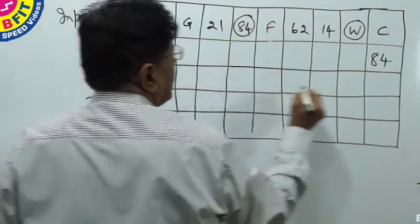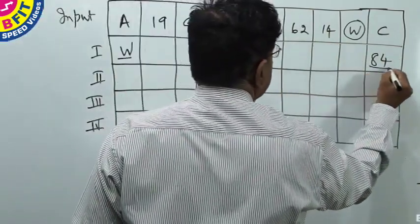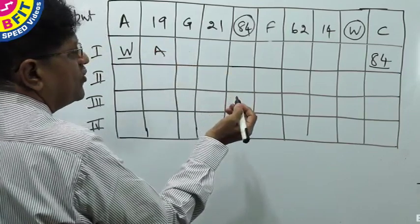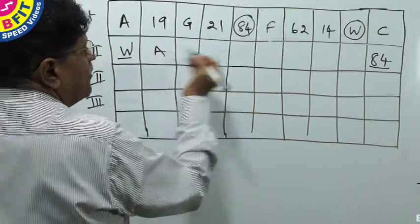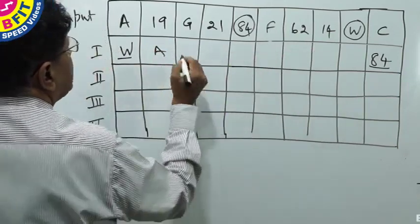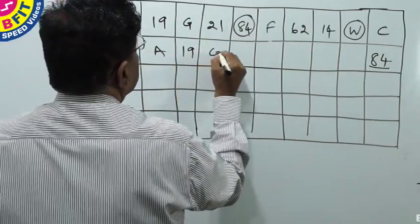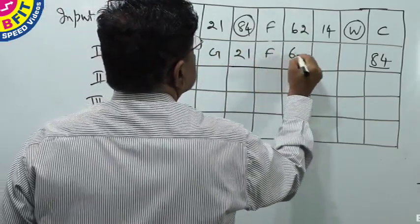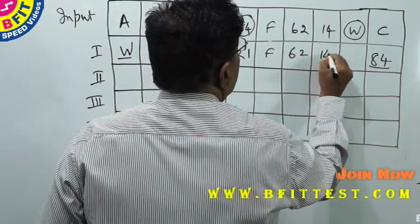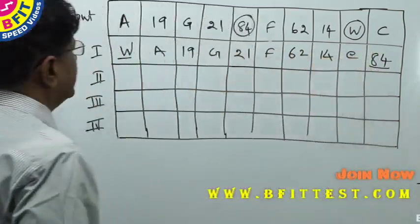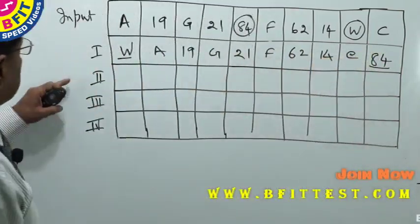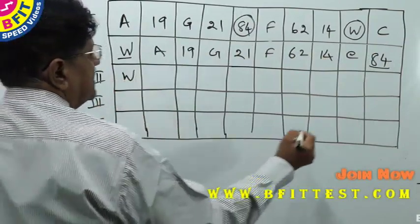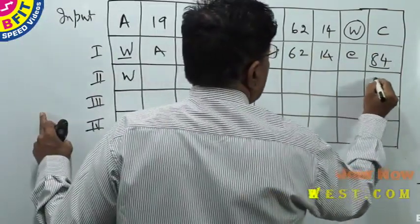So we draw one line. Now we have arranged it. The remaining is: A, 19, G, 21, F, 62, 14, C. Then shifting. In step 2, W is inherited and 84 is inherited.